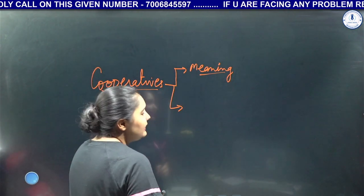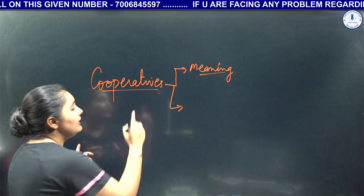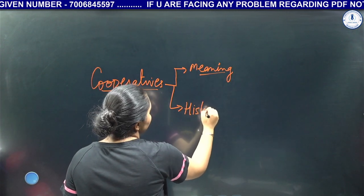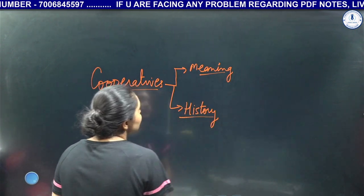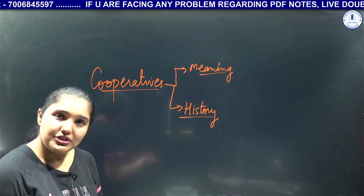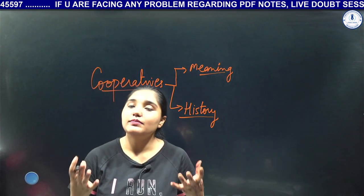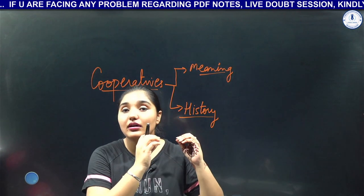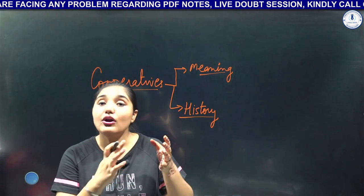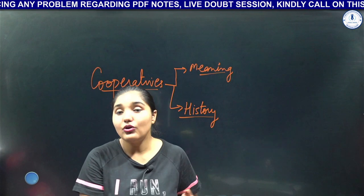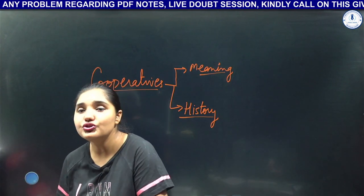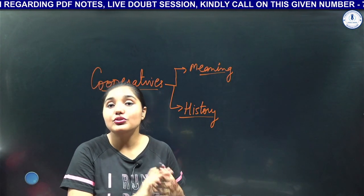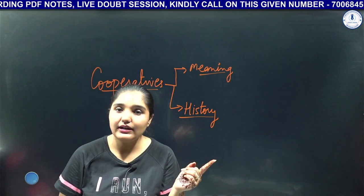After meaning, we need to look at its history. Students, see — any invention, any movement, any revolution that comes into this world has a history behind it. Every movement and revolution emerges from some drawback or bad phase of something existing before it.